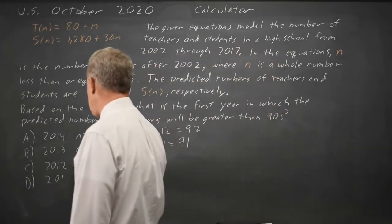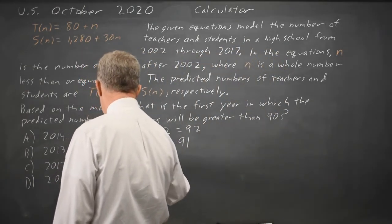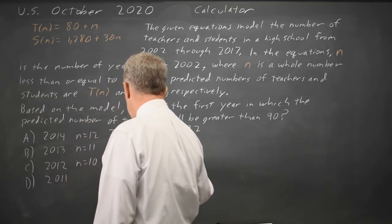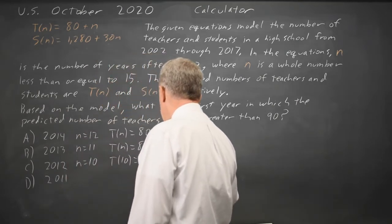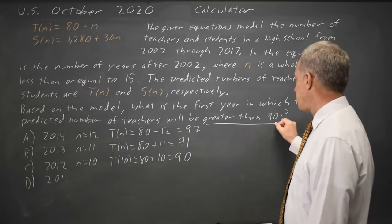2012 is N equals 10, T of 10 equals 80 plus 10, which equals exactly 90, but they ask for greater than 90.